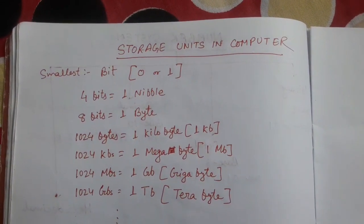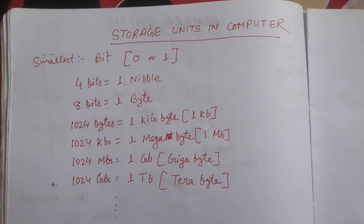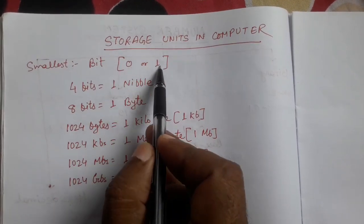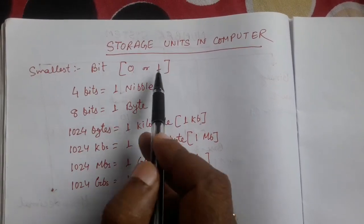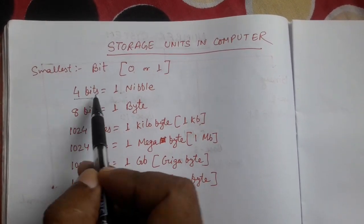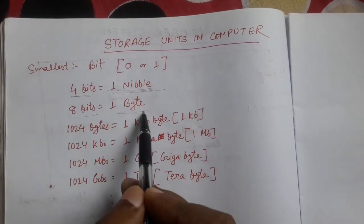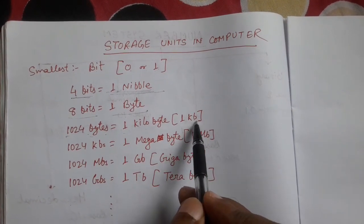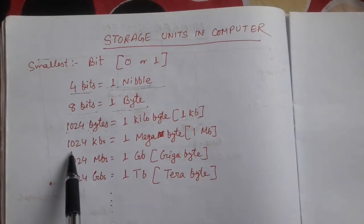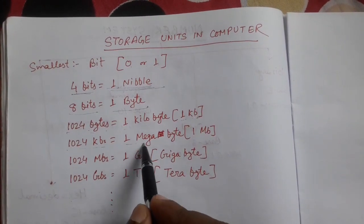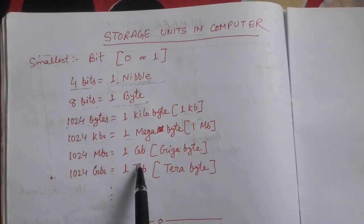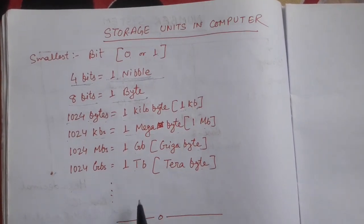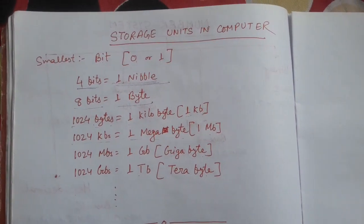To start with other things in number system, we should know about storage units in a computer. The smallest storage unit is called a bit — a bit is either 0 or 1. 4 bits equals 1 nibble, and 8 bits equals 1 byte. Similarly, 1024 bytes equals 1 kilobyte (KB), 1024 KB equals 1 megabyte (MB), 1024 megabytes equals 1 gigabyte (GB), and 1024 gigabytes equals 1 terabyte, and so on. This is called storage units.